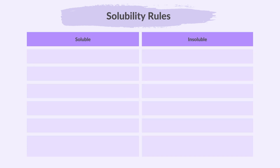Now let's learn the general solubility rules for salts. All sodium, potassium, and ammonium salts are soluble. All nitrates are soluble. Chlorides are soluble except for lead chloride and silver chloride.